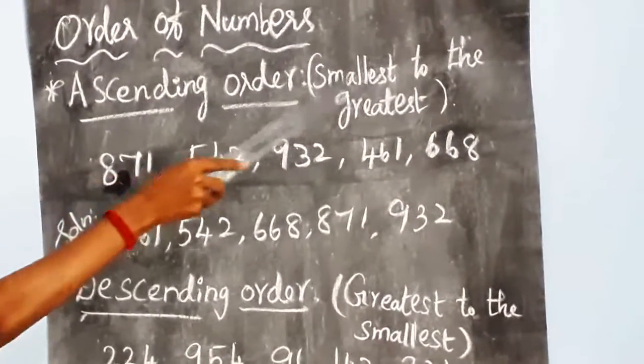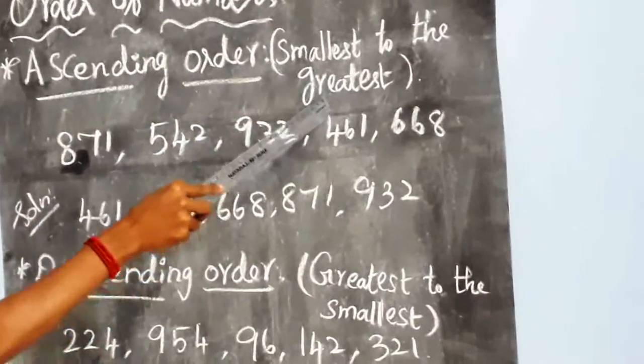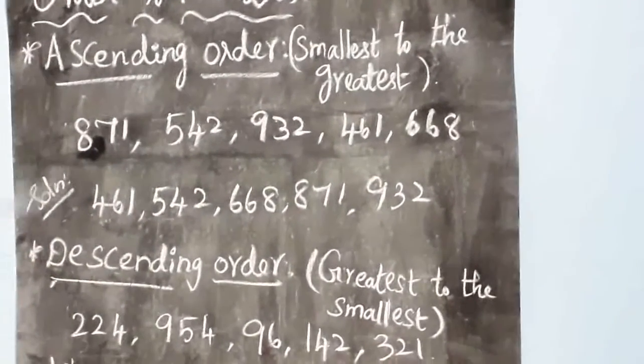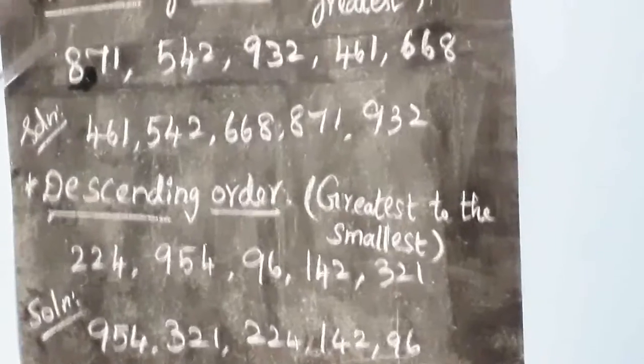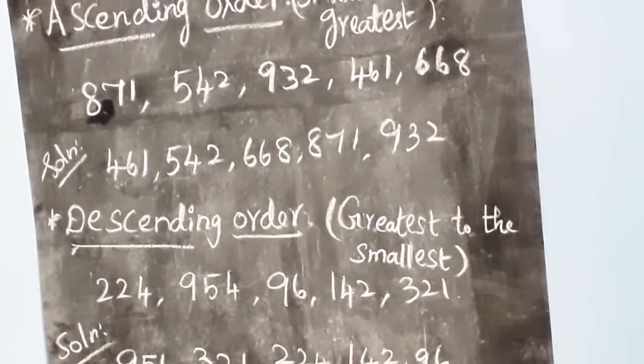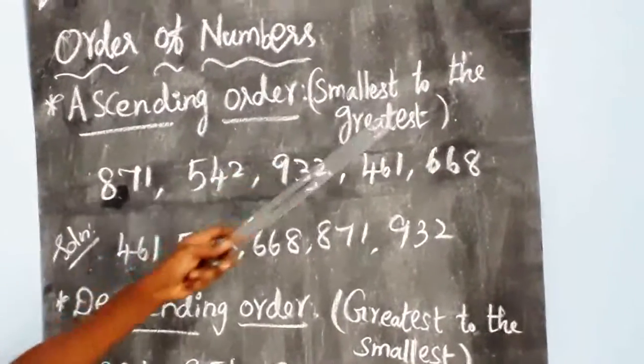Ascending order means smallest to the greatest. Descending means greatest to the smallest. Now look at the ascending order. Ascending order means smallest to the greatest.